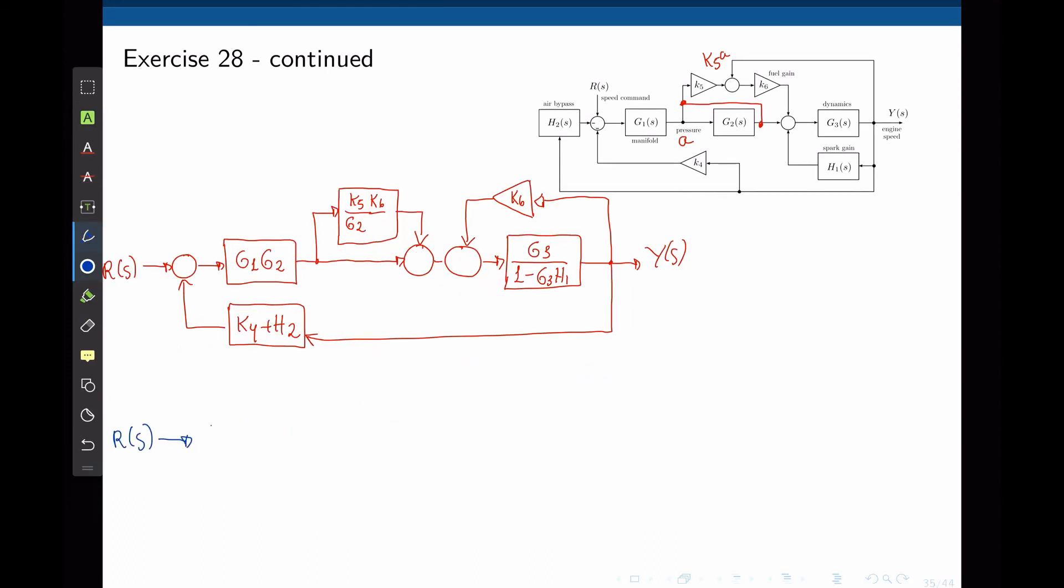Let's again start with R of S. And now let's look at this block K5, K6, G2. If the signal here is A, the signal past the sum is A plus A times K5 K6 over G2. So if you now factor out A, we have A times 1 plus K5 K6 over G2. So this is equivalent to taking A at this point here and multiplying that by 1 plus K5 K6 over G2.